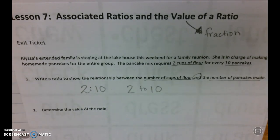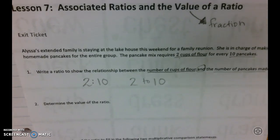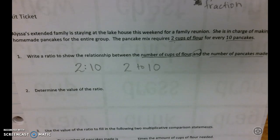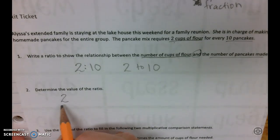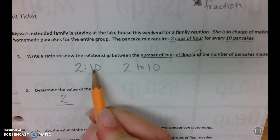Now they say determine the value of the ratio. What they want us to do is determine the fraction for this ratio. When determining the value, we're writing the fraction from the ratio. It goes in the same order - the first number is going to be the top number of our fraction and the bottom number is that second number.